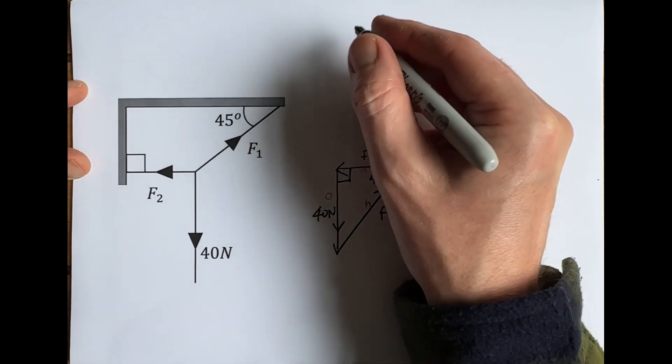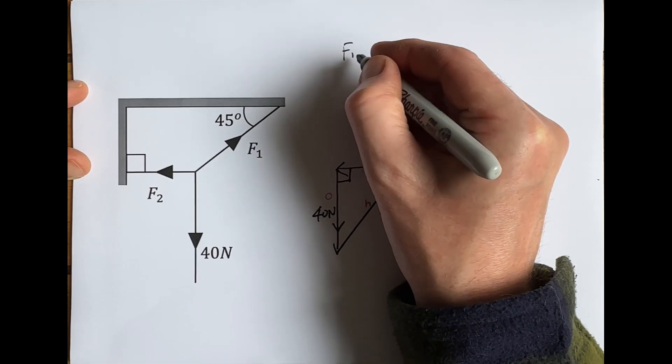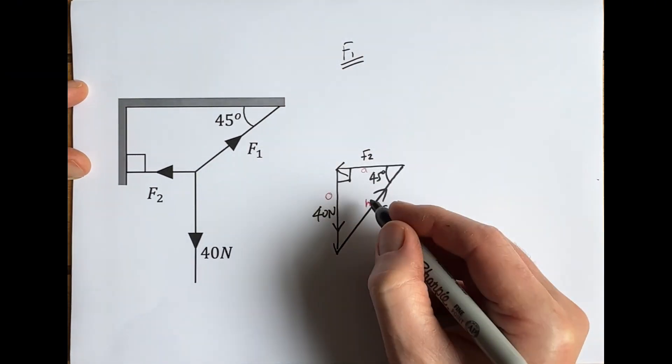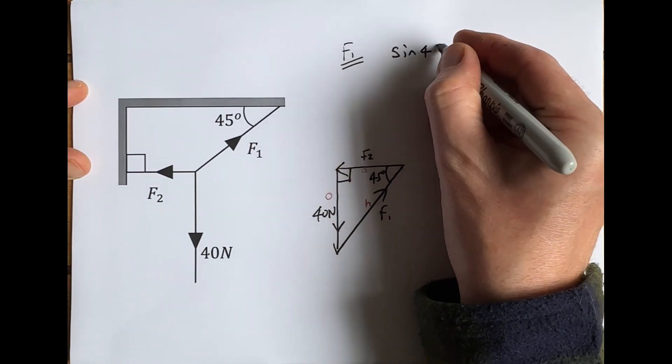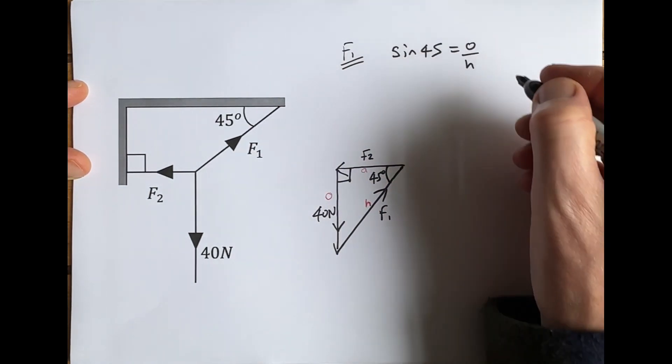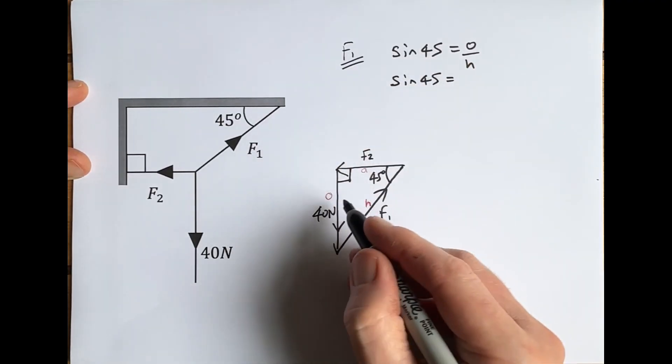Let's do F1 first. To work out F1, we know that sine of 45 is equal to opposite over hypotenuse. We can rewrite that: sine of 45 equals—we know the opposite is 40 and the hypotenuse is F1.